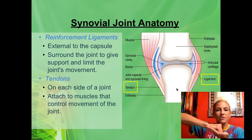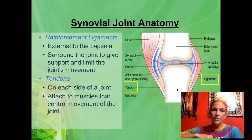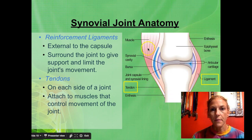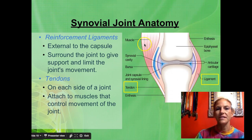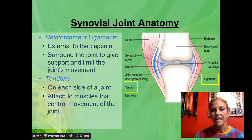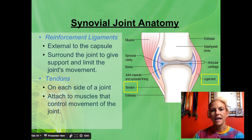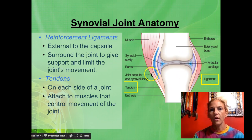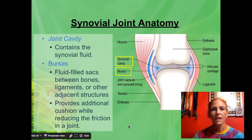Tendons connect muscles to bone. Movement is produced by muscles pulling on bone, and that wouldn't happen if the tendon wasn't attaching the muscle to the bone — the bones don't move on their own. In this picture, a muscle (shown with striated lines) is attached to the bone via a tendon. Sometimes it's a sheet of connective tissue called fascia, but here we're using a tendon — for example, the patellar tendon connecting to the tibia.